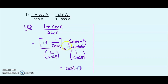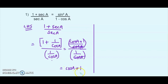To summarize what I did: I changed sec A to 1/cos A, took the LCM in the numerator to get (cos A + 1)/cos A, and the denominator was 1/cos A. Since both fractions had cos A as denominator, they cancelled, giving cos A + 1. We cannot simplify this further, so we now move on to solve the RHS.